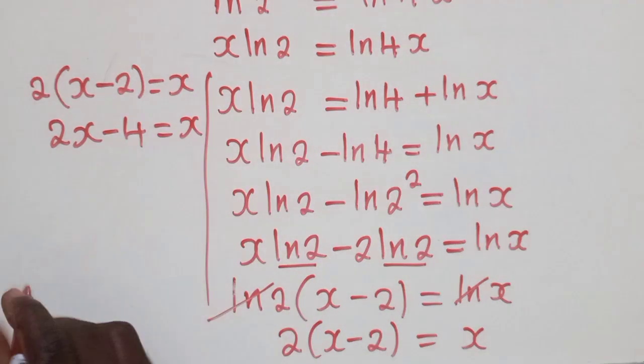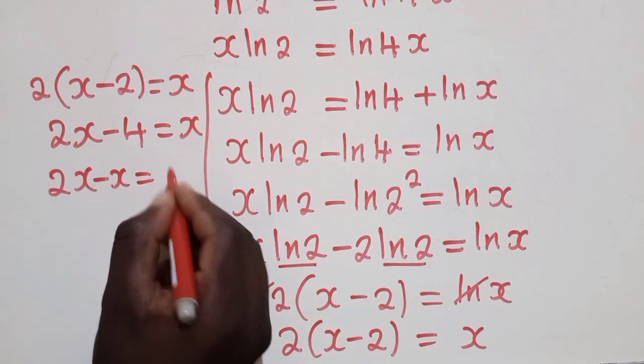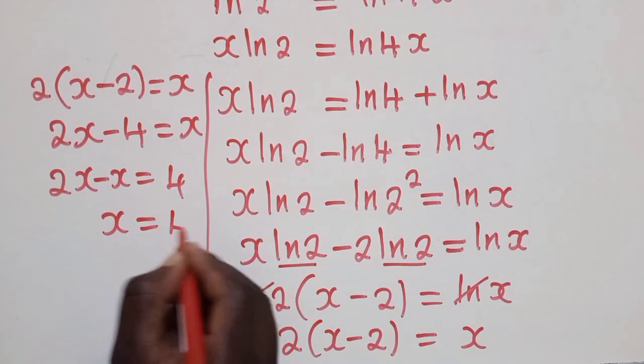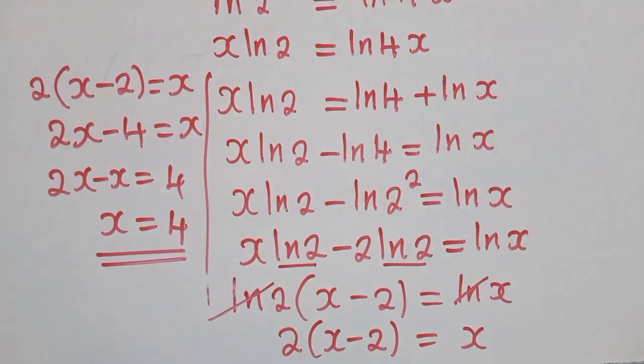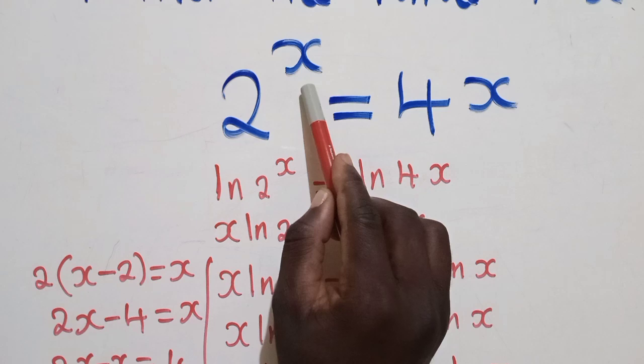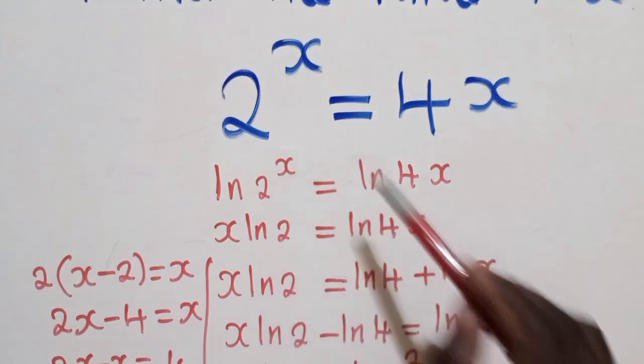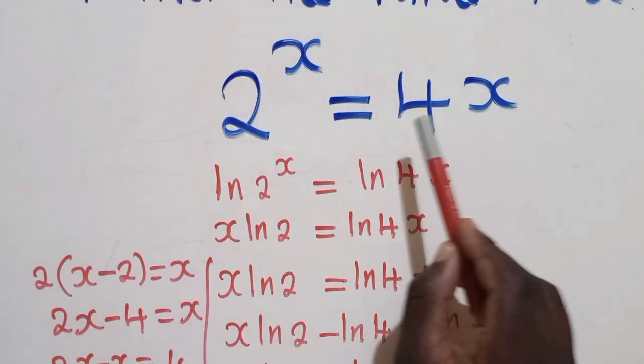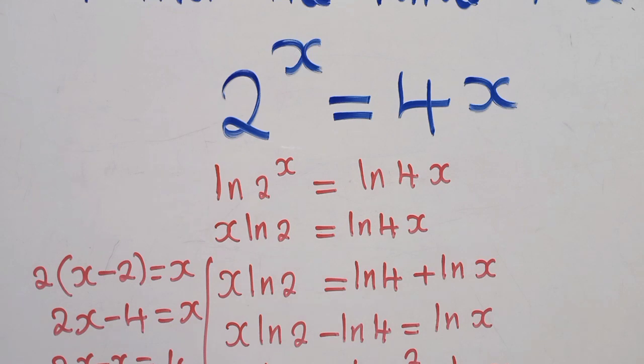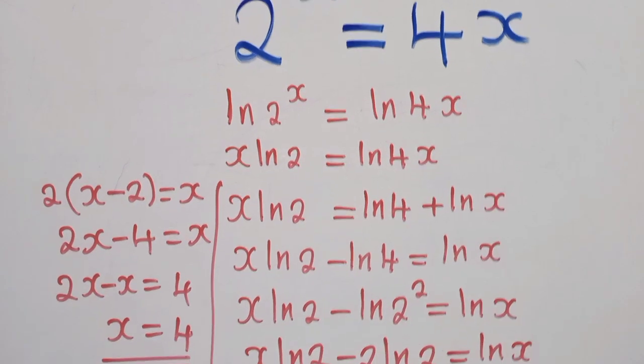Okay, hopefully you're able to see. So now here we group the like terms. 2x minus x is equal to 4. x will be equal to 4. So the value of x is equal to 4. And if you want, you can try to prove. You plug the value of x here, which is 4. 2 to the power of 4 is giving us 16. This side, if we put 4 here, 4 times 4 is 16. So it's working out. The value of x is equal to 4. Thank you and bye-bye.